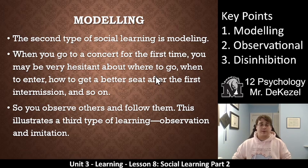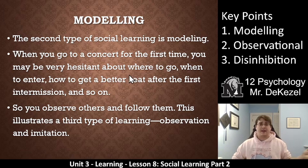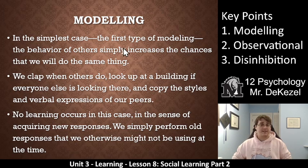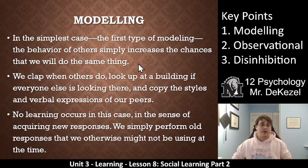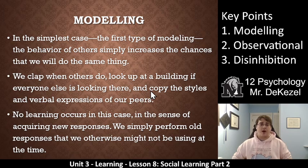When you do something because other people are doing it, that's modeling — kind of surface level, very simple, the original type. In the simplest case, the behavior of others simply increases the chance that we will do the same thing. We clap when others do. We look up at a building when everyone else looks up, even if it's a terrible idea, and copy the styles and verbal expressions of our friends. We laugh when they laugh, we cry when they cry — we model behavior.